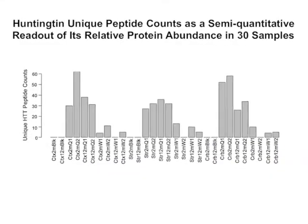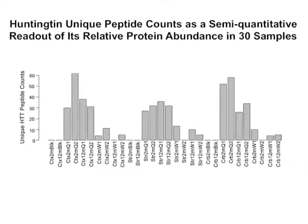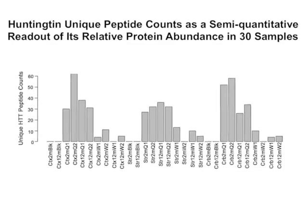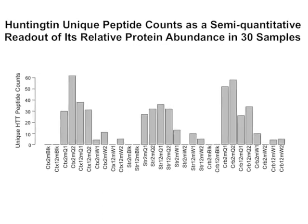We took advantage of the following two features in our proteomic data set. First, the unique mass spec peptide count for a given protein is a semi-quantitative measure of relative protein abundance in our samples. Second, our experimental design allows immunoprecipitation of different amounts of Huntington in BACHD, HD, and wild-type samples, creating a consistent variation of peaks and troughs of relative Huntington abundance across 30 different samples.